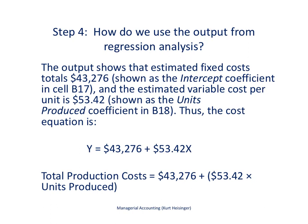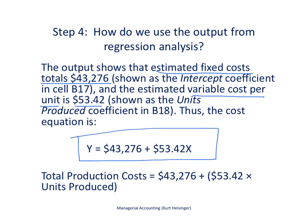As mentioned in the previous slide, the output shows total estimated fixed costs of $43,276 and a variable cost per unit estimate of $53.42. Our cost equation therefore looks like this: to estimate total costs — remember, these are production costs for any given month — we take total fixed costs and add variable cost per unit times the number of units we expect to produce in a future month. Once we plug X in, we can run the numbers to determine what total costs are expected to be.